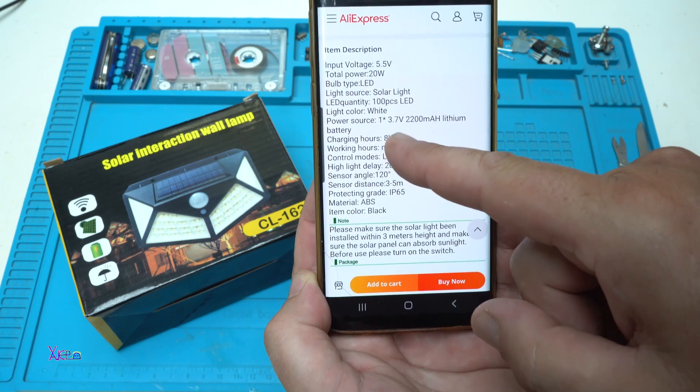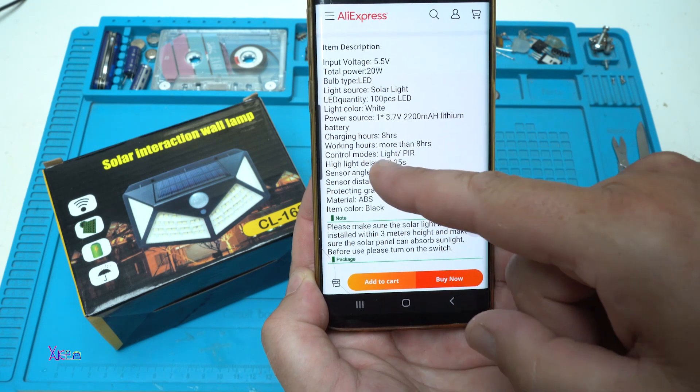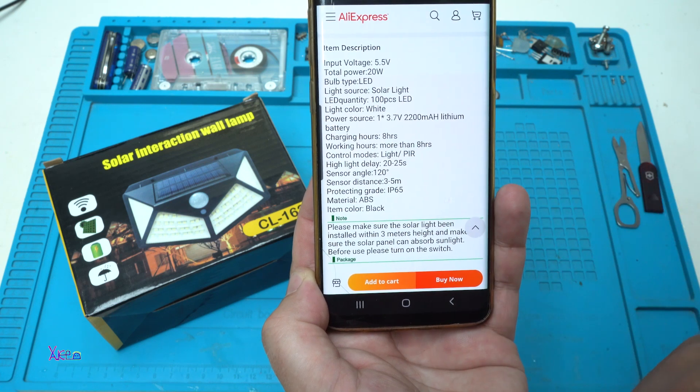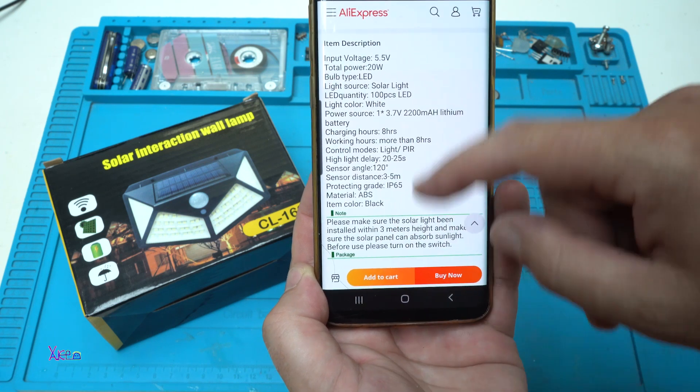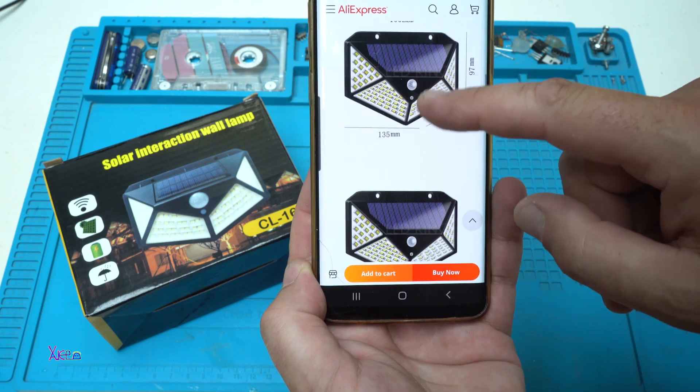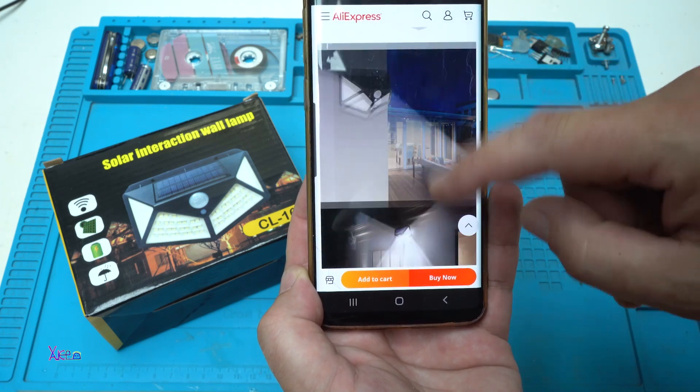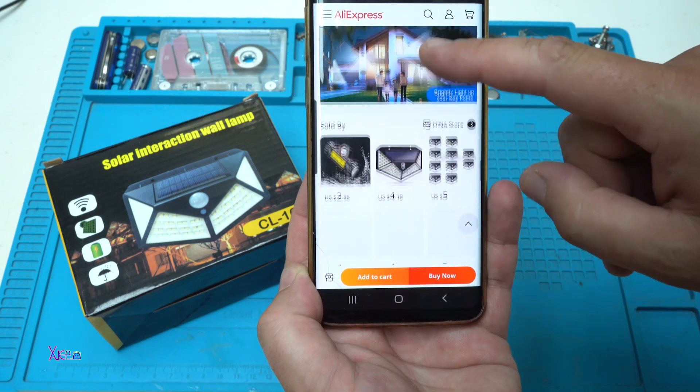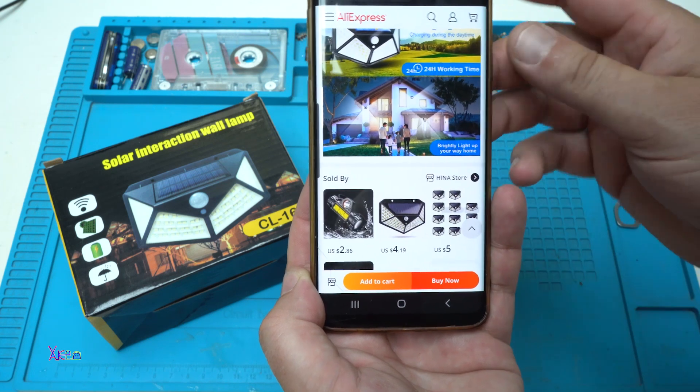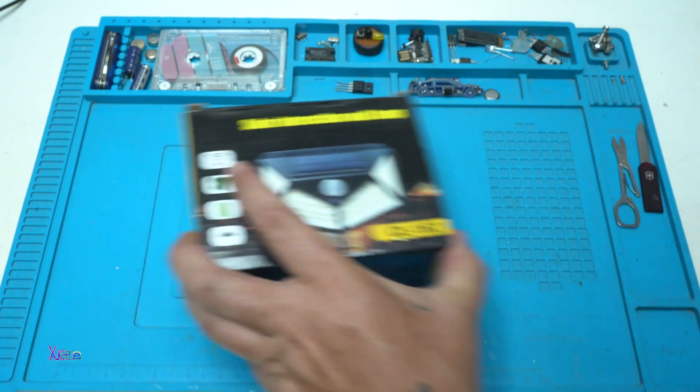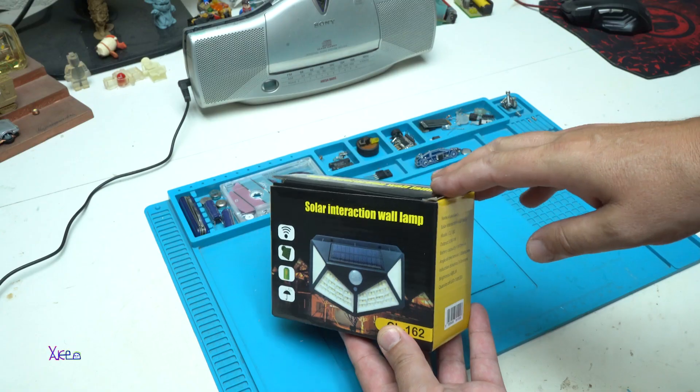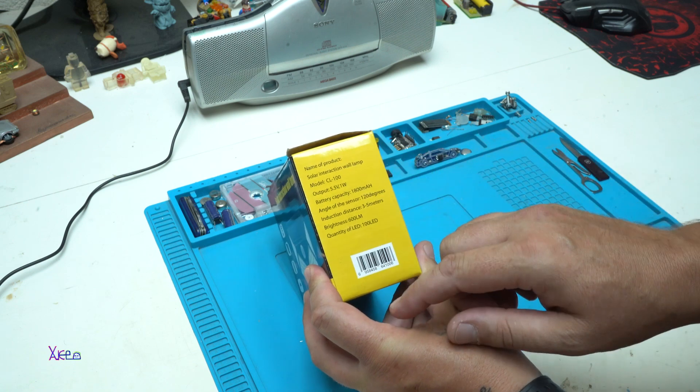Charging hours: 8 hours. Control modes: light peer sensor. Waterproof. It comes in white color also.